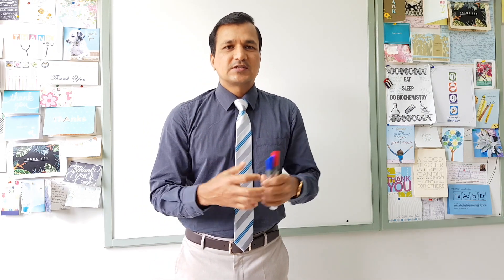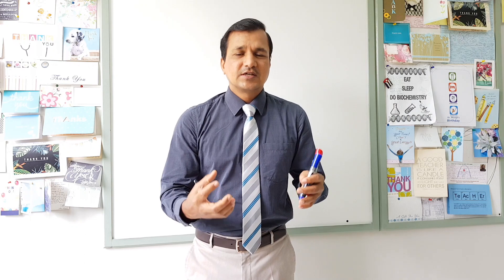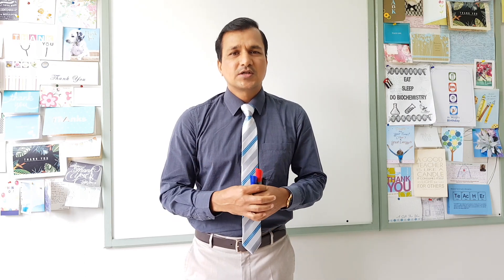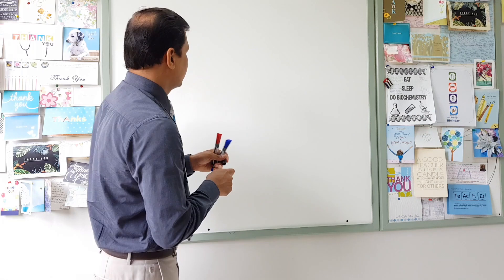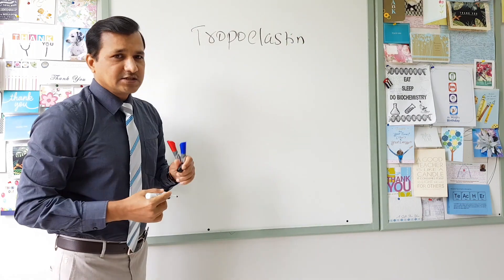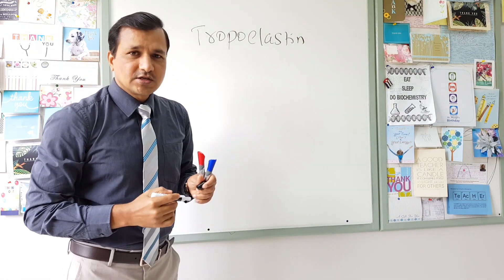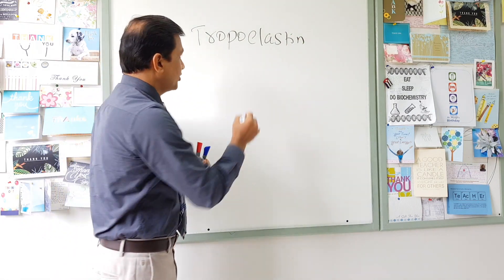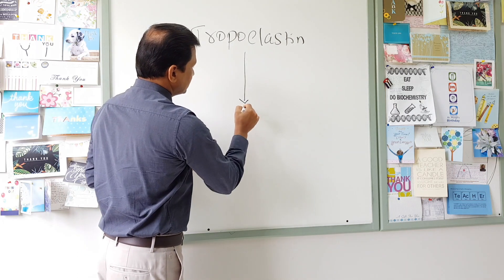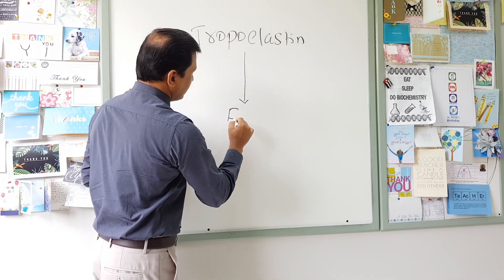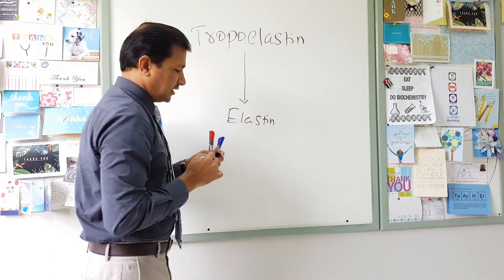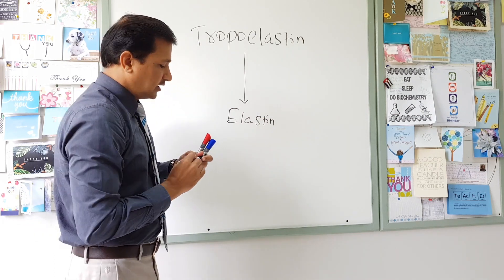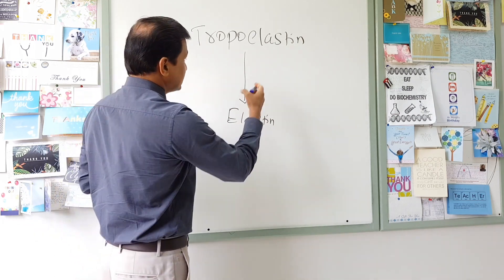Why does elastin have rubber-like properties? Elastin is derived from a precursor protein called tropoelastin. Tropoelastin is converted into elastin by an enzyme called lysyl oxidase.